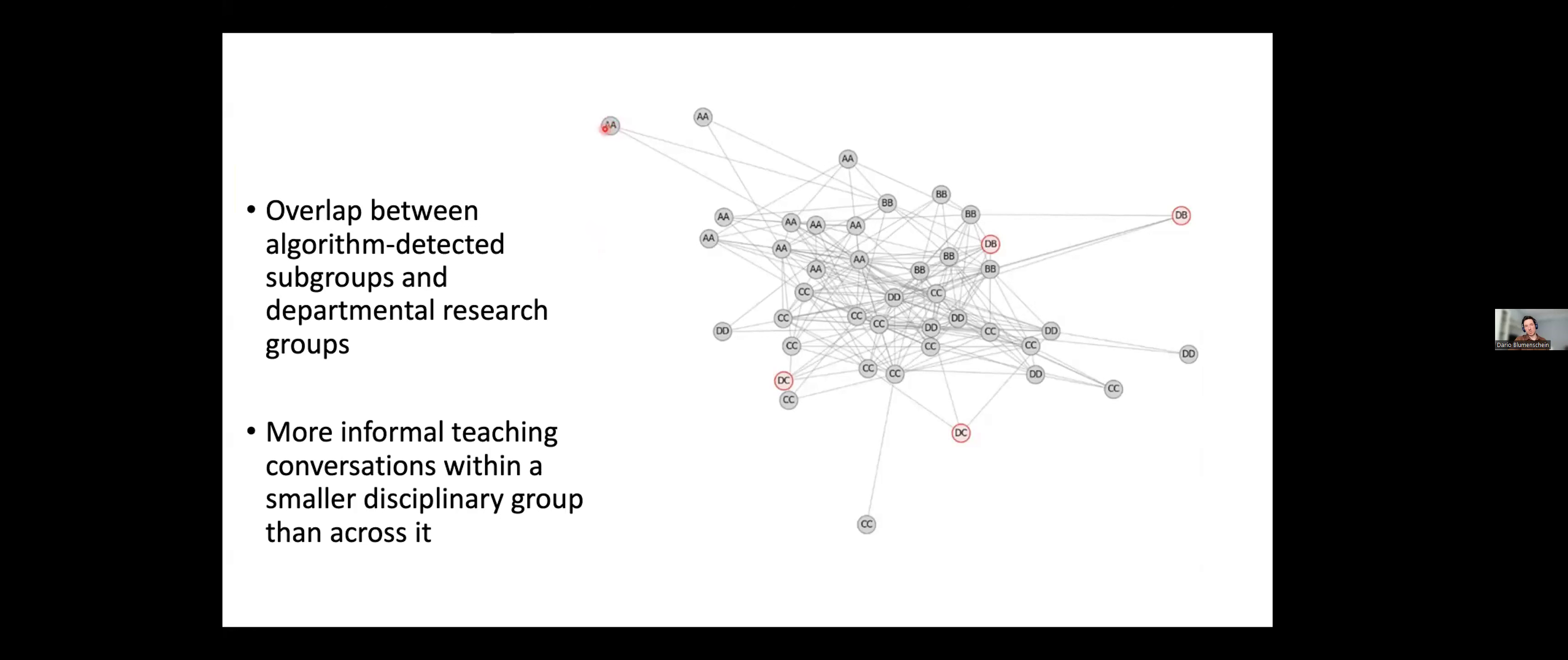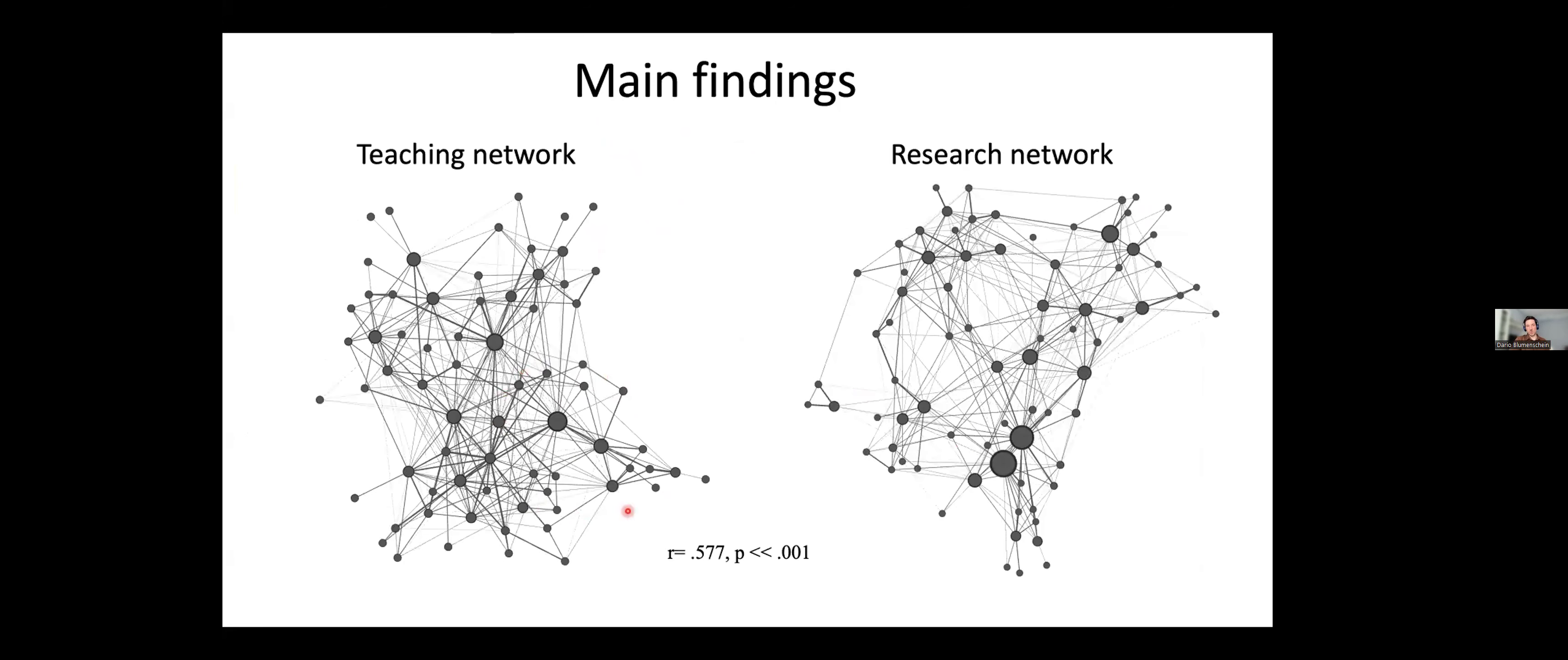And then we started looking, is there any overlap between what the community detection algorithm detected with the four subgroups and with the four research groups that we have? And what we noticed is that we basically had almost a perfect overlap between the subgroups detected by the algorithm and between the research groups that we have at the department. So if you can see, there's two letters. So it's basically A, B, C, D. If it's A, A, it means that it belongs to the subgroup A and the research group A. And only in four examples, we have a situation where there is no such overlap. A person maybe belonged to one subgroup that is detected by the algorithm and a different research group. But majority of the individuals ended up belonging to the same research group, which means that there is more informal teaching conversation within a smaller disciplinary group than across.